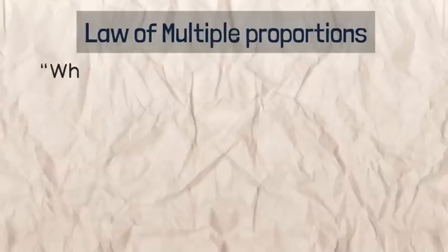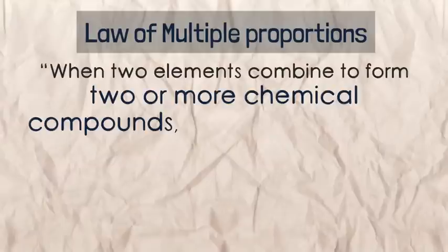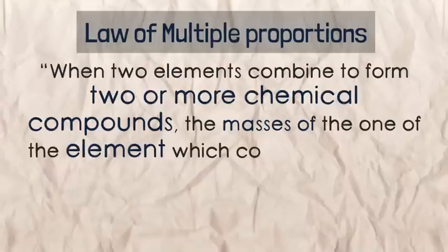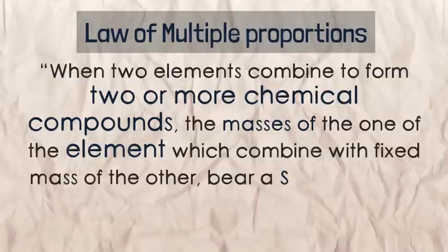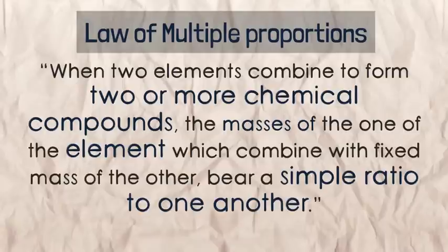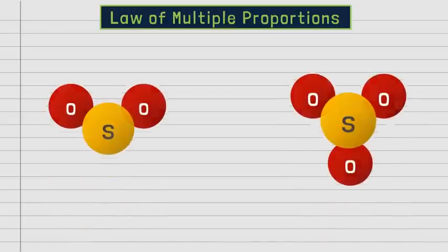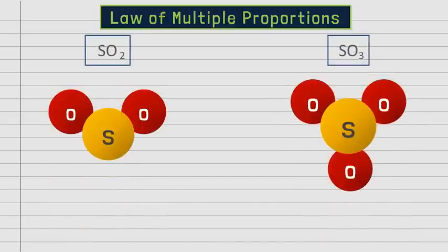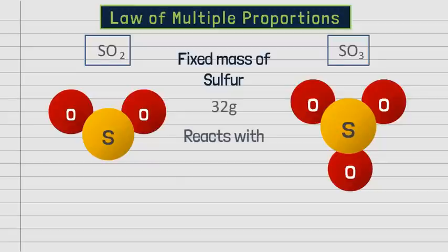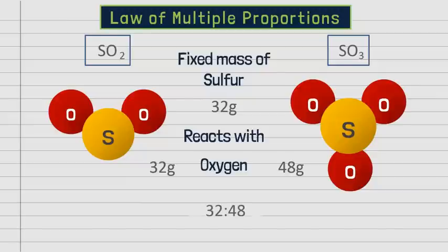Law of Multiple Proportions: When 2 elements combine to form 2 or more chemical compounds, the masses of one element that combine with a fixed mass of the other bear a simple whole number ratio. For example, sulfur and oxygen form both sulfur dioxide and sulfur trioxide. Every 32 grams of sulfur combines with 32 grams of oxygen in sulfur dioxide and 48 grams of oxygen in sulfur trioxide. The ratio of oxygen in both compounds is 32:48, which simplifies to 2:3 — a simple whole number ratio.